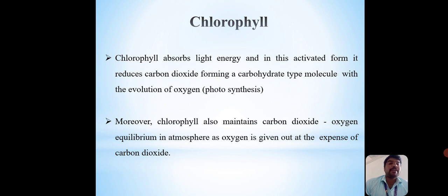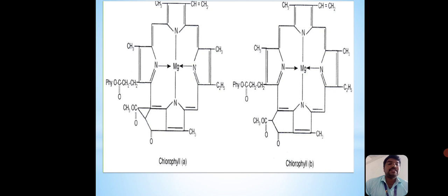Moreover, chlorophyll also maintains carbon dioxide-oxygen equilibrium in the atmosphere as oxygen is given out at the expense of carbon dioxide. This is the chlorophyll structure. Magnesium is the center of the porphyrin. This is chlorophyll A and this is chlorophyll B.